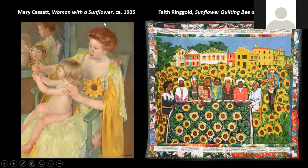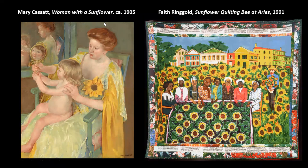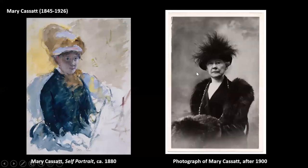We're looking at the two paintings that are going to be the subject of today's discussion. We're going to begin chronologically and consider Mary Cassatt and her Woman with the Sunflower painting first. I just want to show you a couple of images of Mary Cassatt.